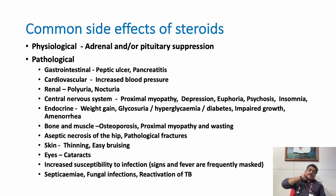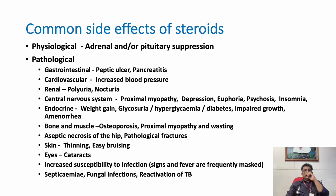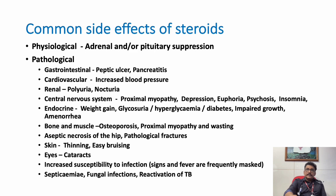Other problems from steroid use include GI ulcers, increased blood pressure, polyuria and nocturia. Proximal myopathy is very important — many patients on chronic steroid use cannot get up from a squatting position, which is the first sign of proximal myopathy. Weight gain, diabetes, osteoporosis, fractures, necrosis of hip, pathological fractures, thinning of skin, and easy bruising are also seen. Patients on chronic steroids can develop cataracts.